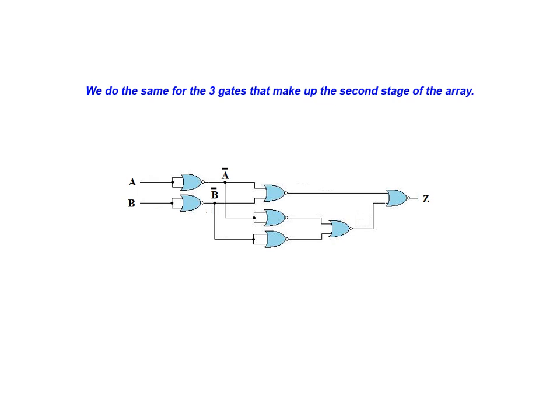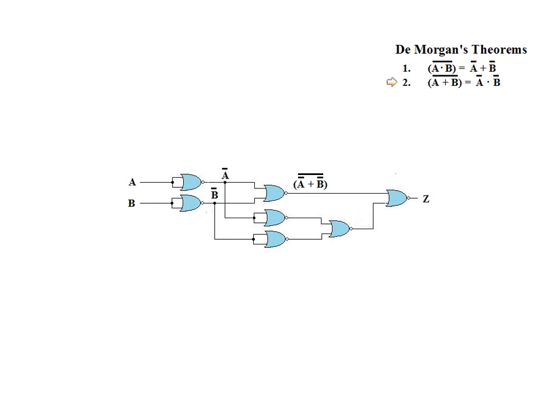We now do the same for the next three gates that make up the second stage of the array. The first gate in stage 2 performs the NOR logic function on the NOT A and NOT B inputs. At this point we will now use DeMorgan's second theorem to simplify and reduce this expression. When we apply this theorem to our output expression we arrive at a new equivalent expression as shown here. We can further simplify this expression by clearing the double inversion. As a result the original expression is reduced to a simple AND function.